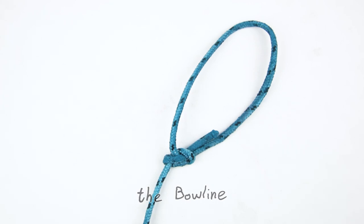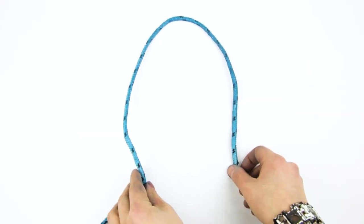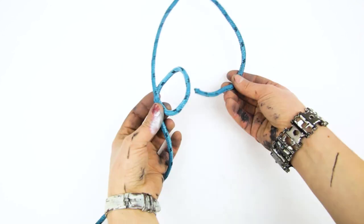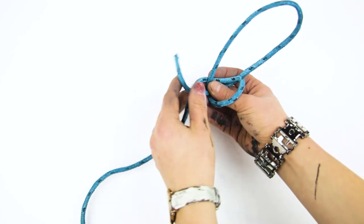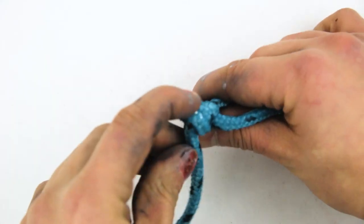The bowline is always the first knot I need whenever I need to tie down something. So listen closely. Short end, long end. Short end goes on top of the loop, then underneath, underneath, and back home. And it opens up by just pulling this part down.